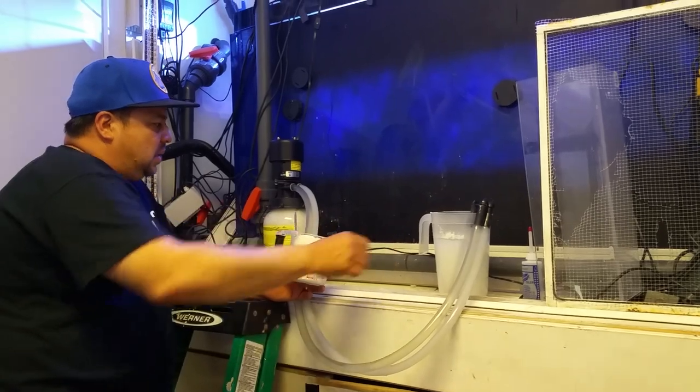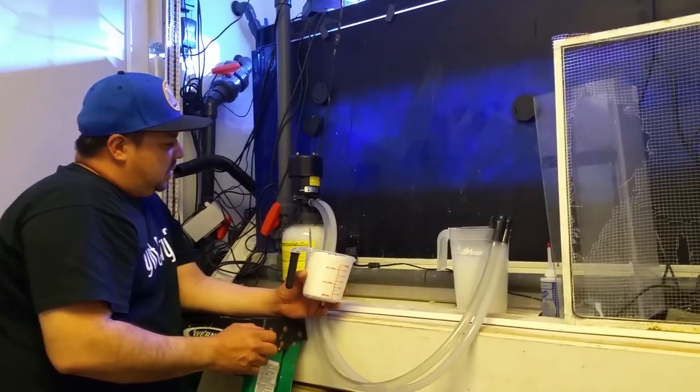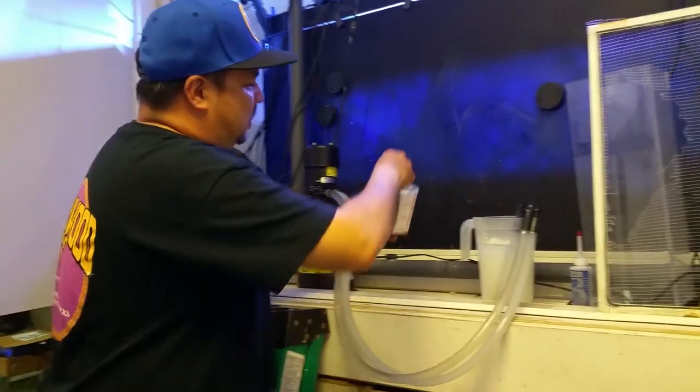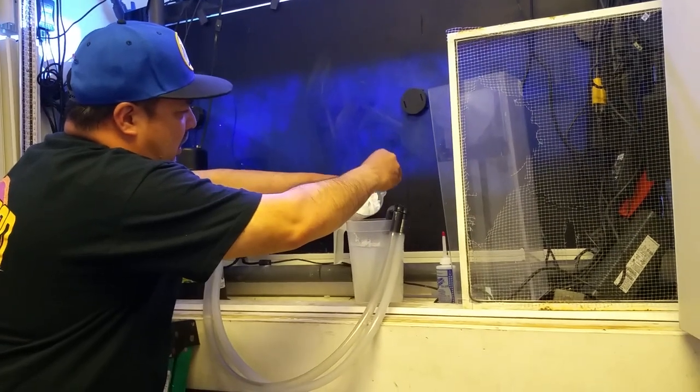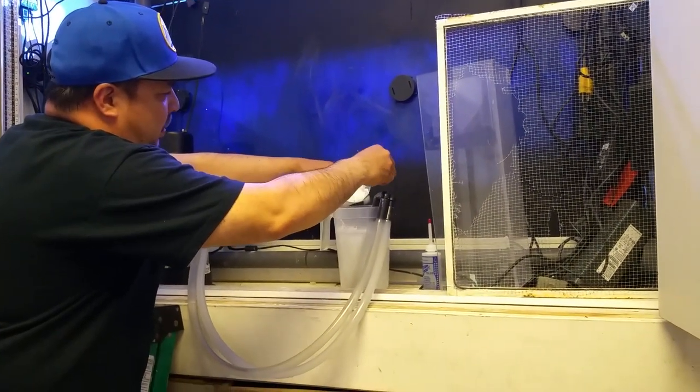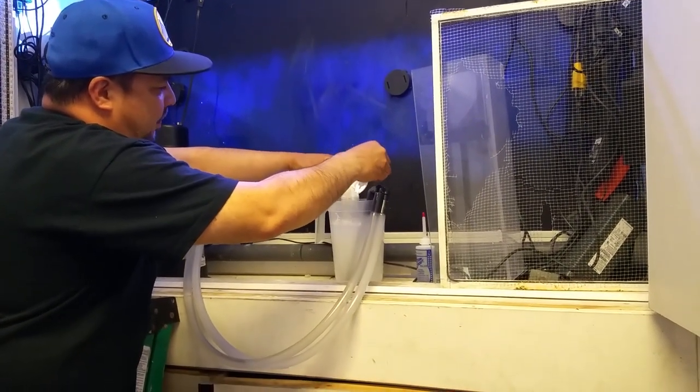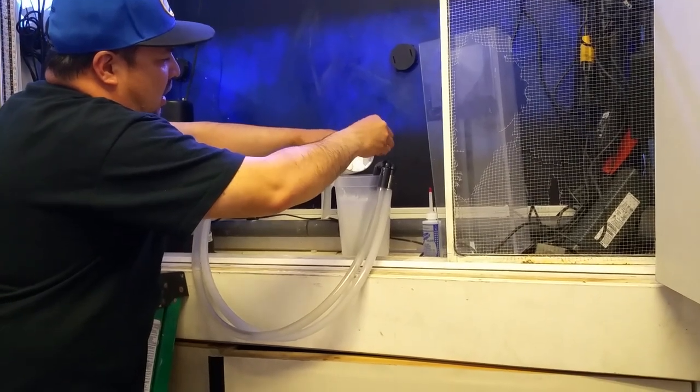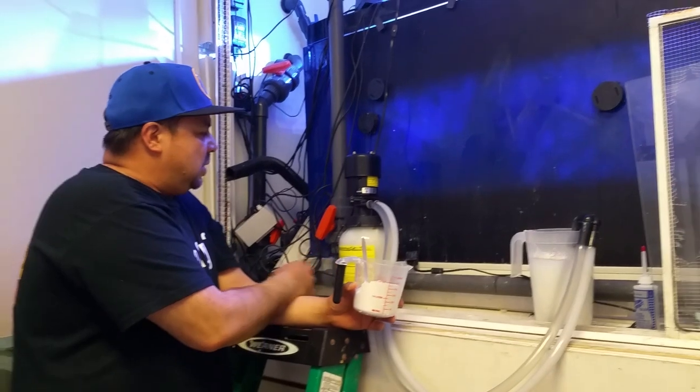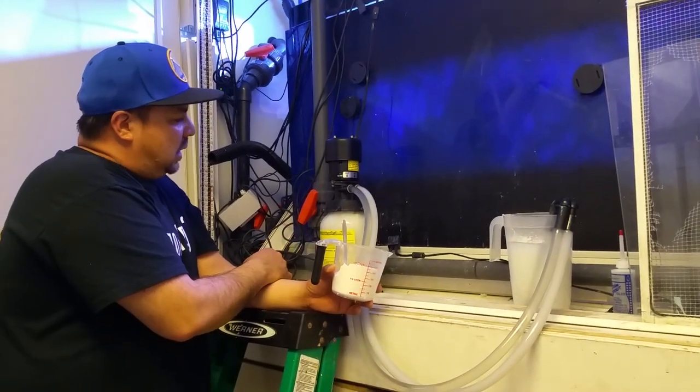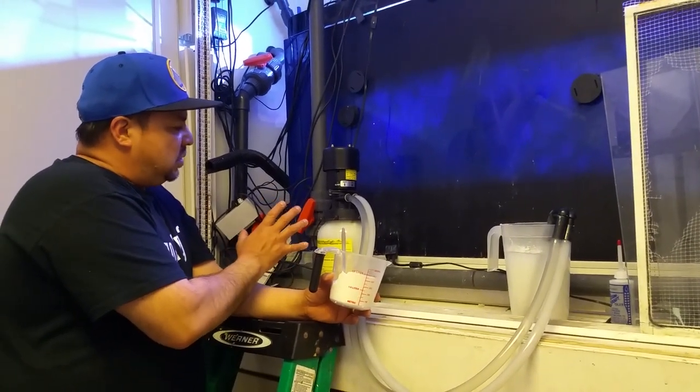As soon as it clears up a little bit, we add a little bit more. Because if you put in too much, sometimes you'll get an uneven coating on the polyester filter. So this way if you do it slowly, a little bit at a time, it coats it evenly.